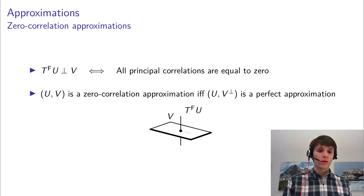But this requires us to put a mask on the key, because otherwise the average would be zero. The downside of this is that round keys are not necessarily independent. And more importantly, we are not really interested in the average correlation — we are always interested in the correlation for a fixed key. So that's a downside of the Markov cipher assumption.